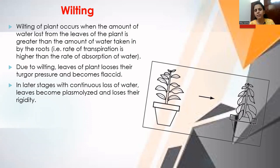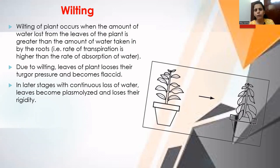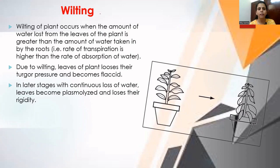If no water is present in the soil — for example, a plant in a garden that has not been watered — but the rate of transpiration is high, then there is very limited water available. The rate of absorption of water by the plant is very low, and as a result, the leaves of the plant wilt.